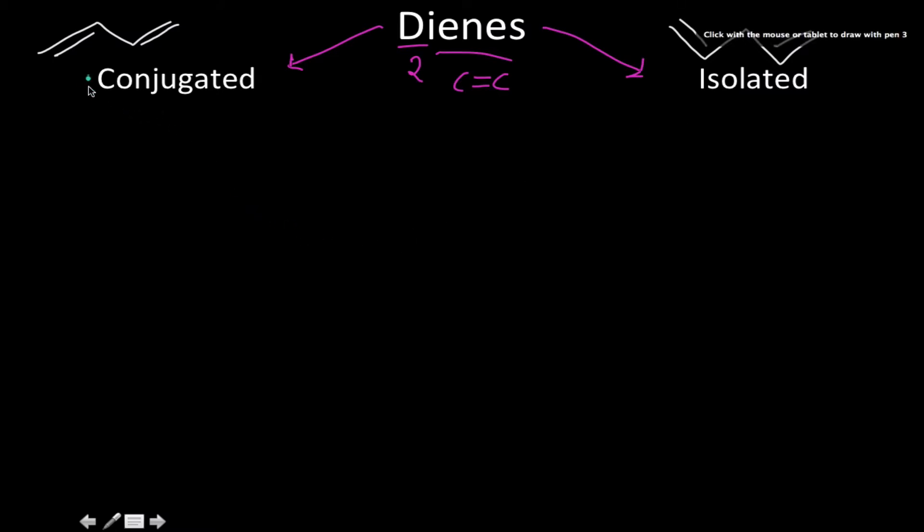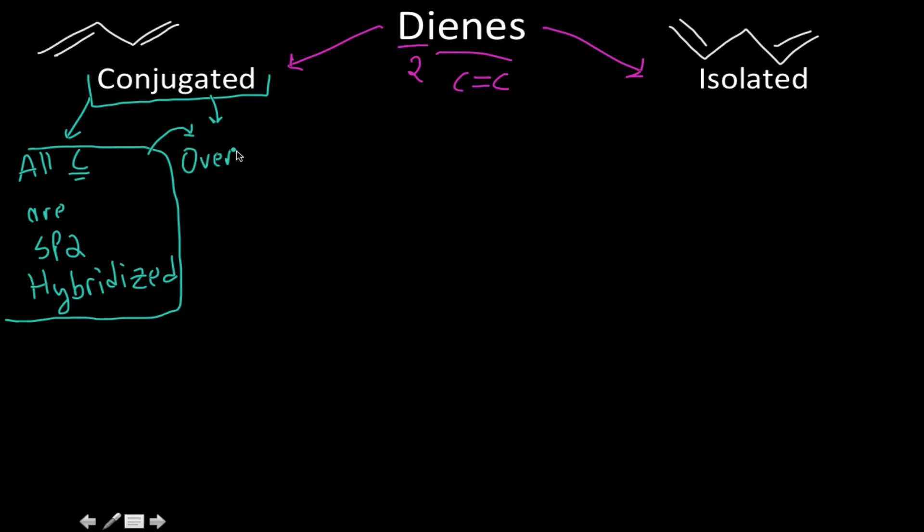For conjugated dienes, there's some notes that you may want to make. All carbon atoms are sp2 hybridized. So if they're all sp2 hybridized, a conclusion, or at least something that we can infer about it, is that we have a really effective overlap of p-orbitals across the entire molecule.